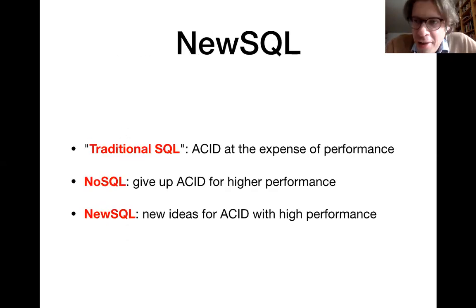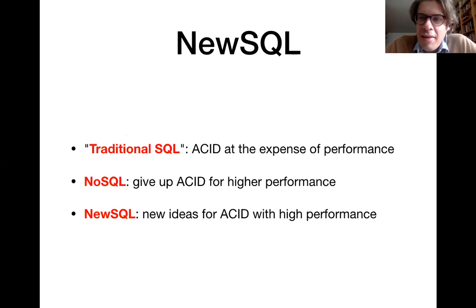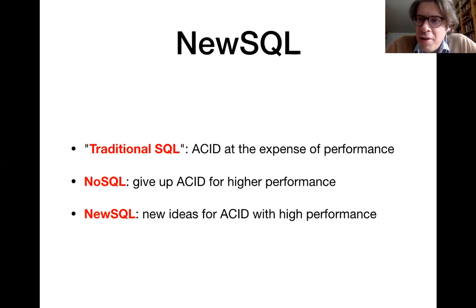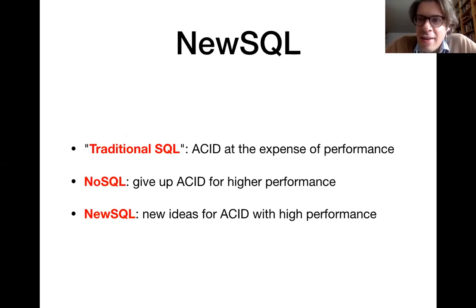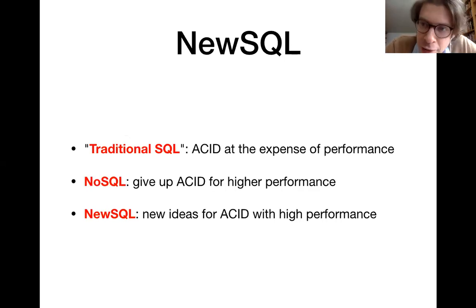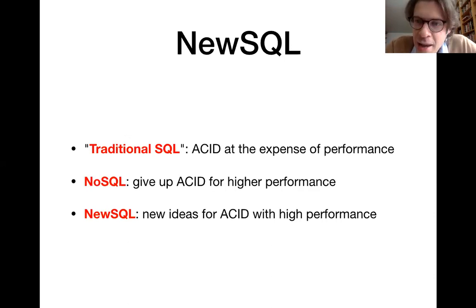After that, we have seen NewSQL systems. NewSQL systems essentially get back the ACID guarantees — and in some cases even stronger guarantees — by exploiting a couple of new ideas, for instance new hardware. We have in particular seen the Google Spanner system and HStore in this context. So we had an overview of different distributed database systems that make different trade-offs in terms of which consistency guarantees they make and under which circumstances they remain available.